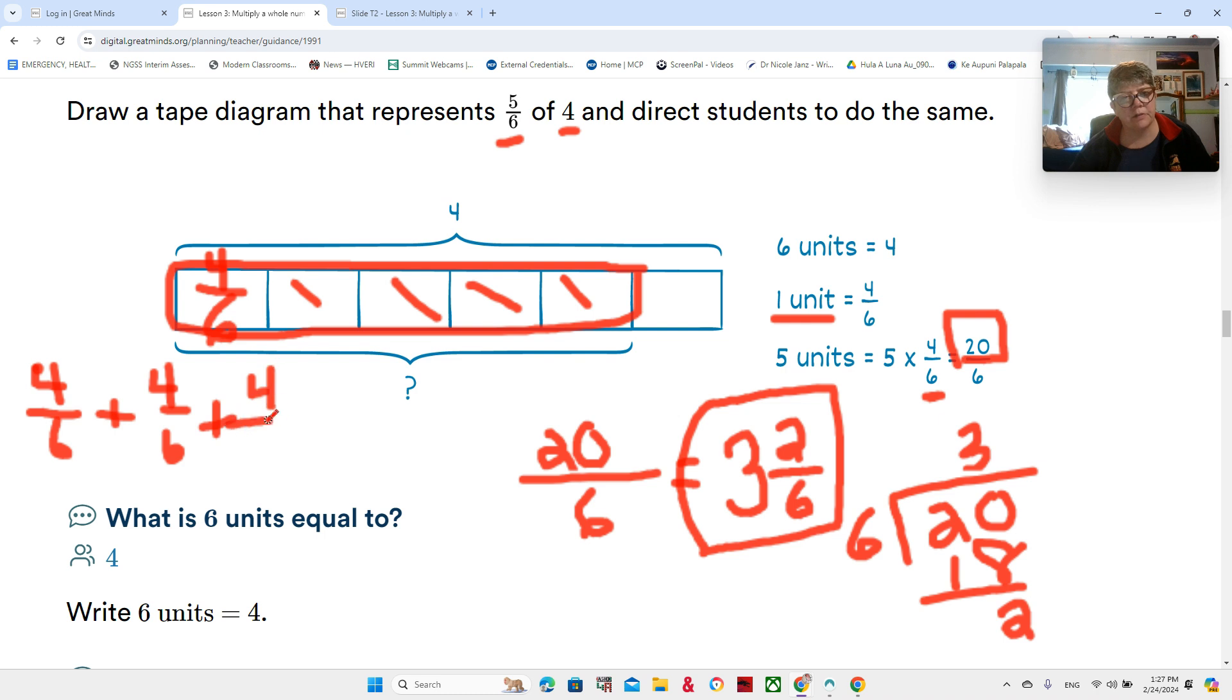Plus four-sixths, plus four-sixths, plus four-sixths. Yeah, sure we could have done that. And then we would have to add: four, eight, twelve, sixteen, twenty. Still going to be twenty-sixths.